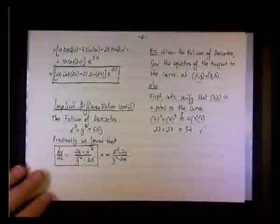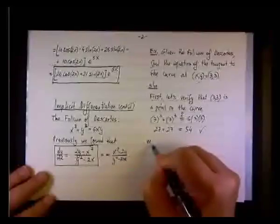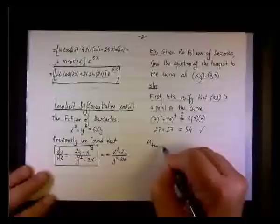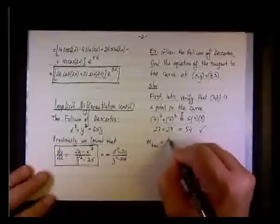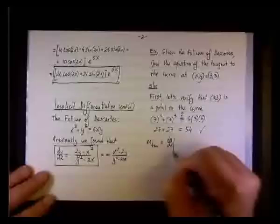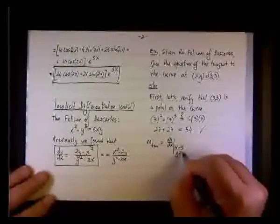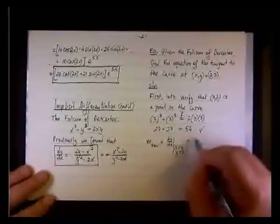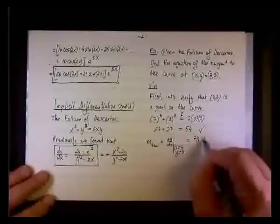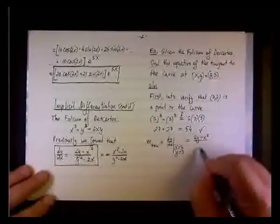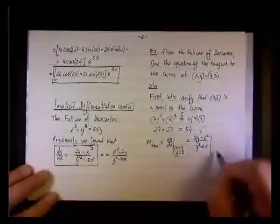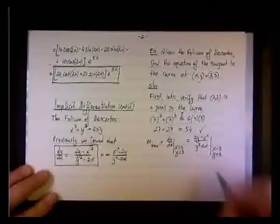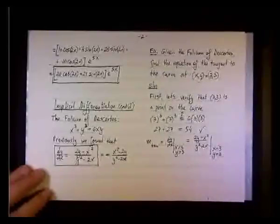So we got that point. And now we're going to say that the slope of the tangent is simply dy dx, when x equals 3 and y equals 3. So we have these two points, right? So we need to evaluate this 2y minus x squared over y squared minus 2x, when x equals 3 and y equals 3. Notice this notation.